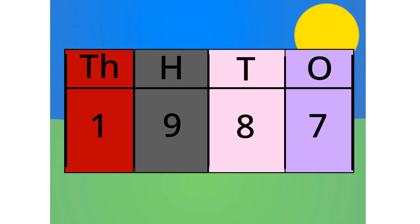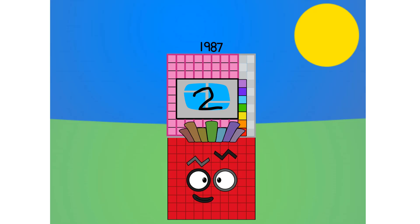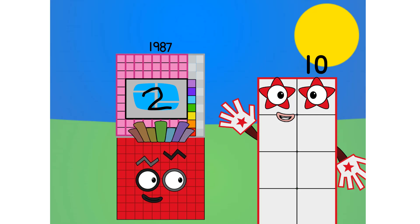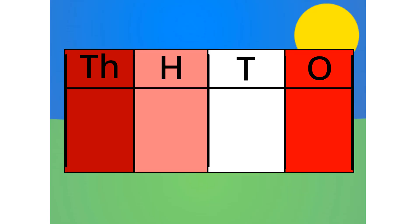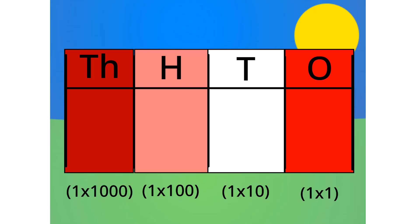Let's see this in block form, shall we? As you can see, this number is 1,900s, 8 tens and 7 ones. Let me carry on with the first method. Do you notice anything with this table? The number multiplies by 10 each time it goes left one column. Because it multiplies by 10 each time, we call this system base 10.